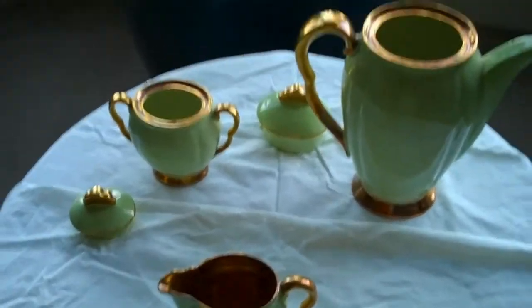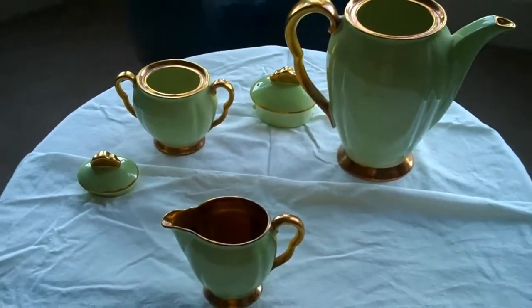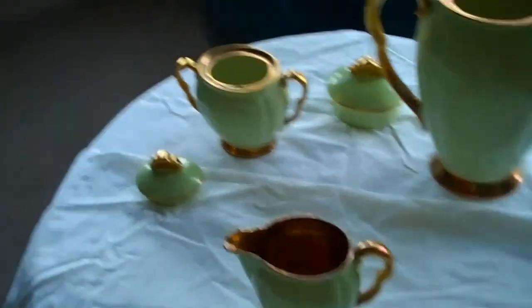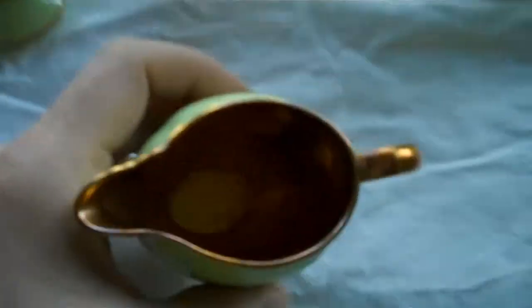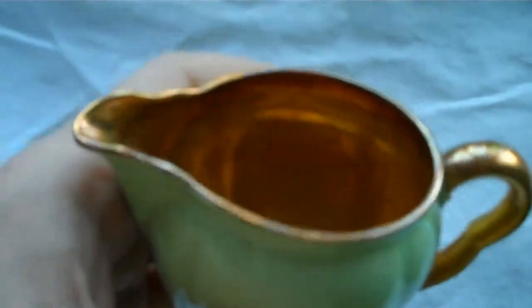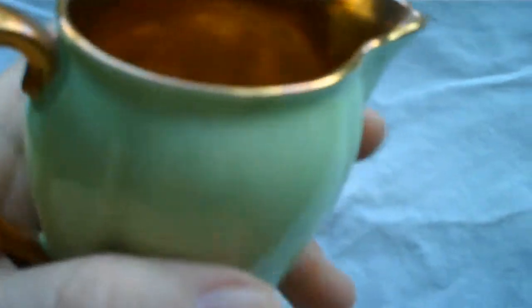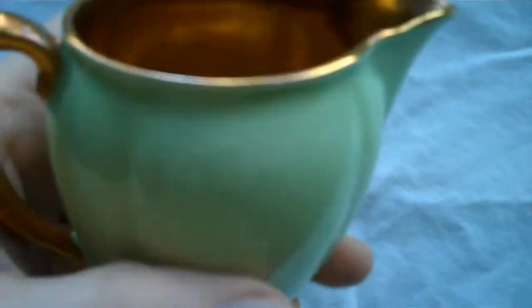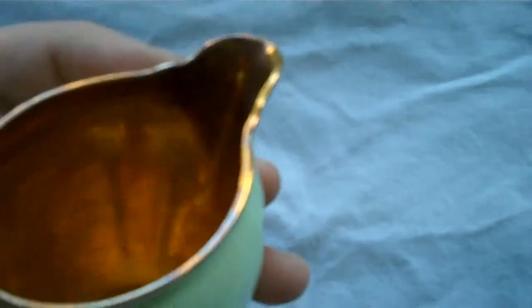Okay, I'm now going to talk about the three larger pieces and just check through the condition on those. Starting with the creamer. Again, we can see that the gold is intact. There's been a slight dulling to the color of the gold compared with the coffee cups.